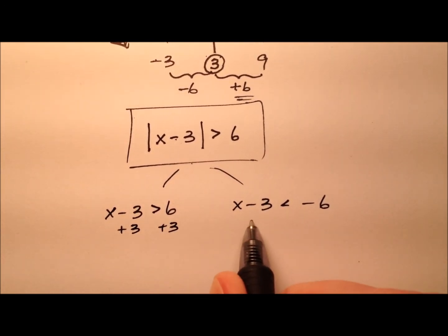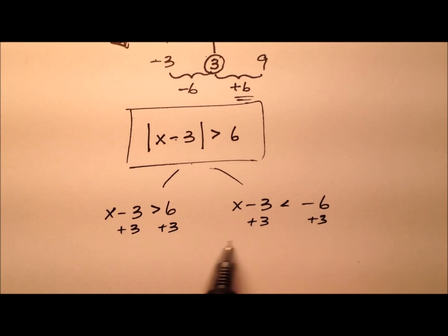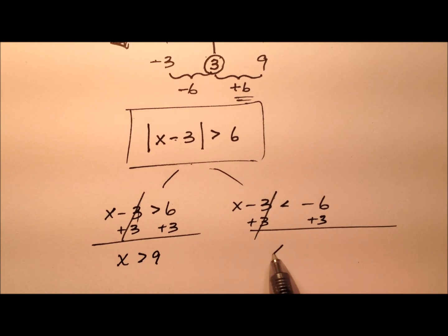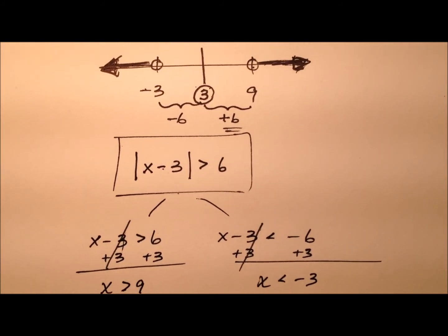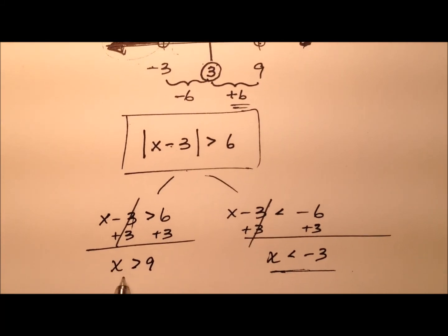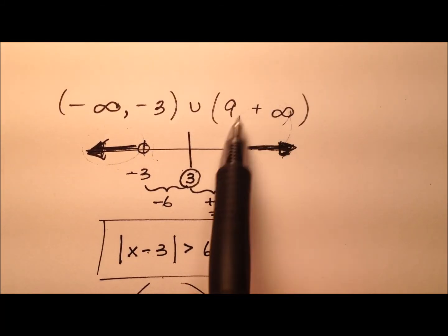So adding 3 to everything here, we can say that x is greater than 9, or x is less than negative 3. Well going back up here, x less than negative 3, well that's what we had, and then x greater than 9, yep that's what we had there too. So we know that this is correct.